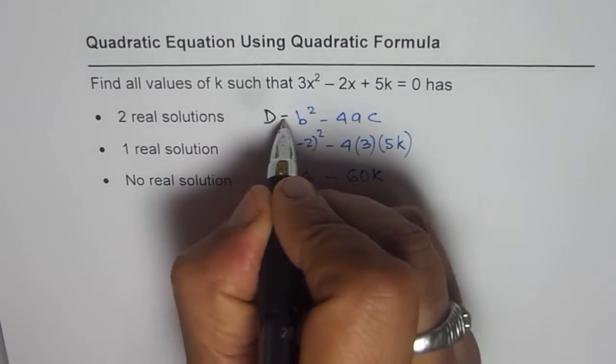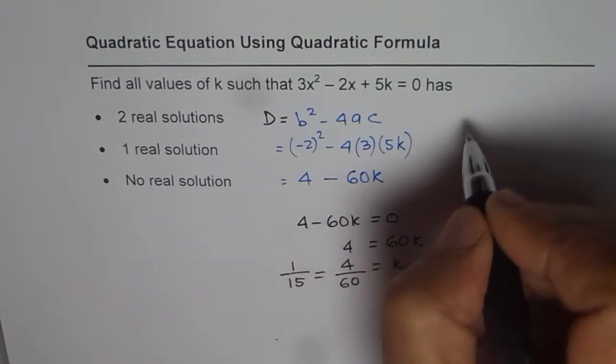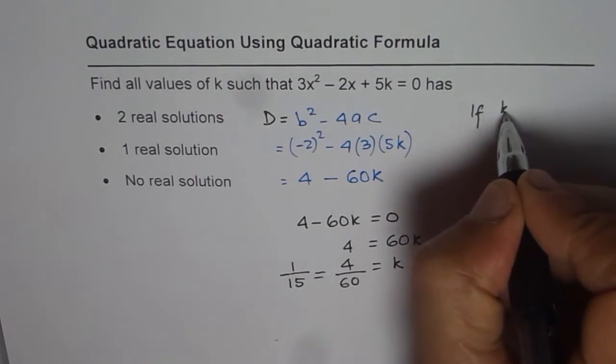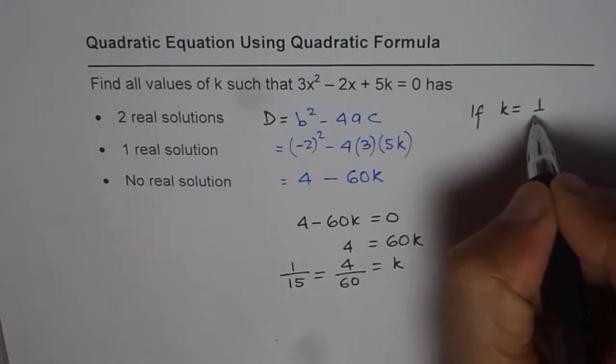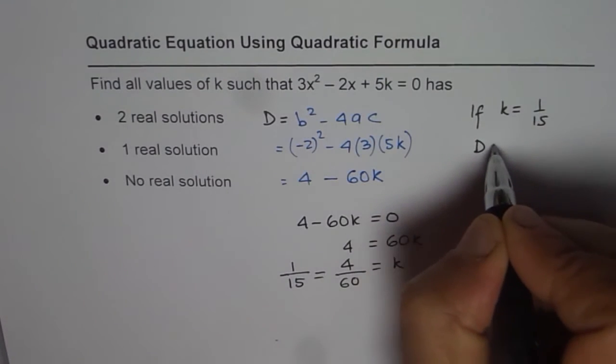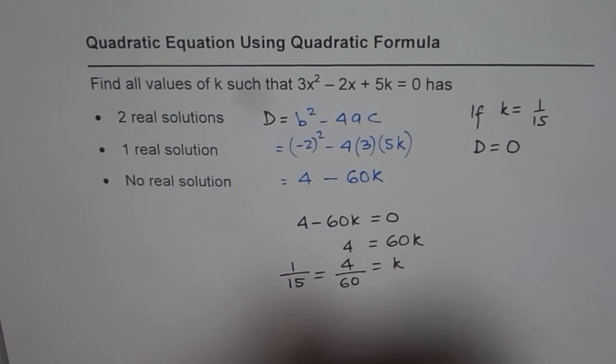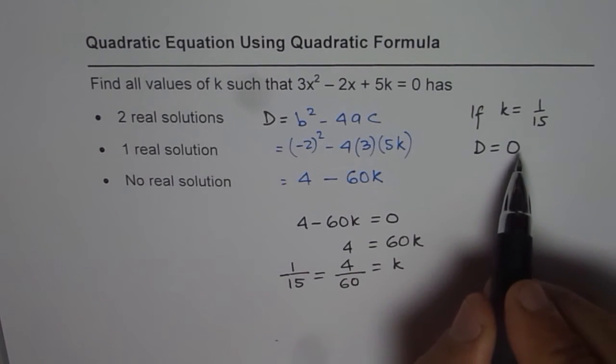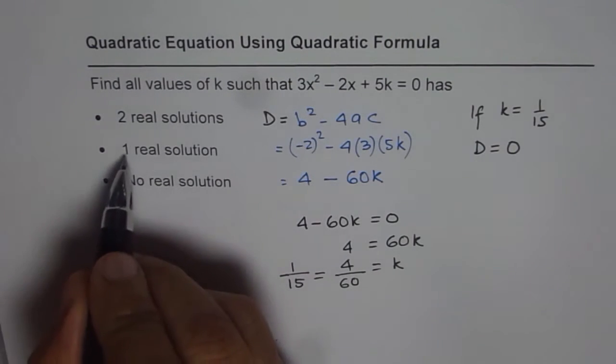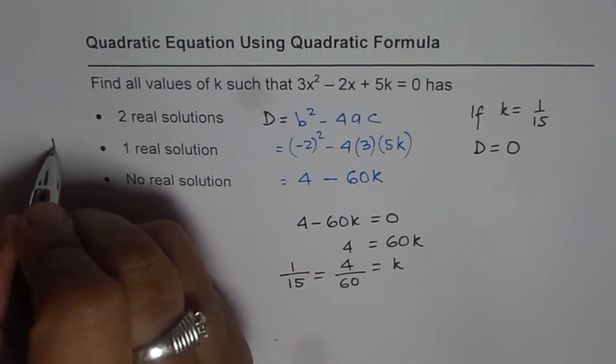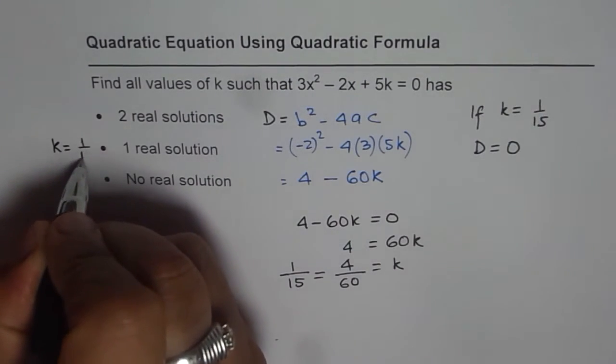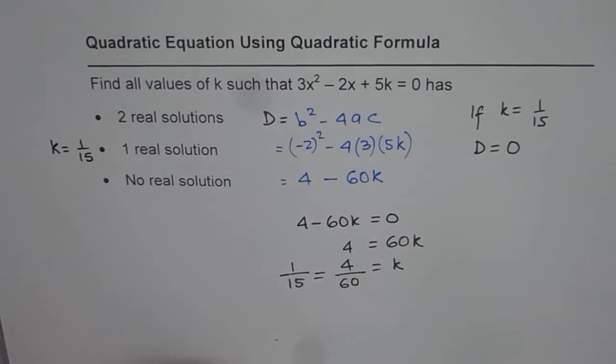So this is discriminant d and if k = 1/15, then d = 0. So that means 1 real solution. So for one real solution, we have k = 1/15.